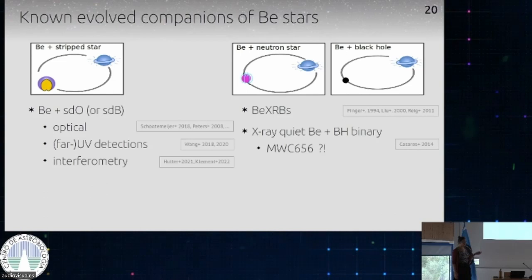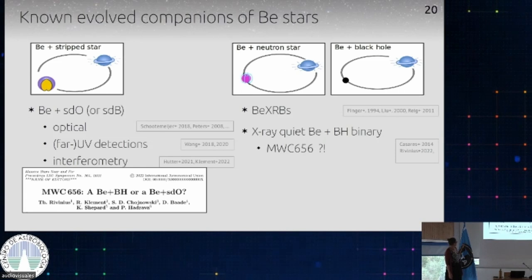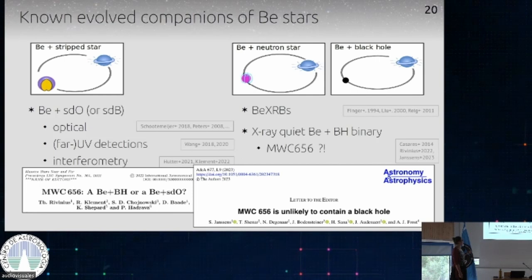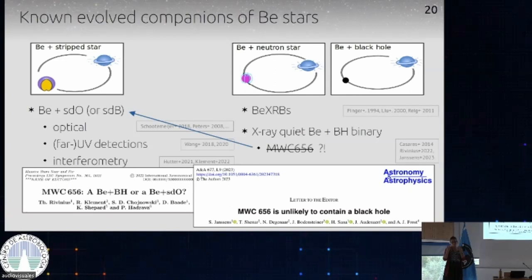Actually, recent work — first as a conference proceeding and then as a letter to the editor — proposed that there is probably no black hole in that system. So it's not an X-ray quiet BE binary with a black hole companion, but actually probably a BE plus subdwarf system in which the mass was overestimated, and what's there is not a compact object but another stripped star — making it a BE plus subdwarf system. So far we don't know of any X-ray quiet BE plus black hole binary, but they should exist — they're probably just hard to observe.